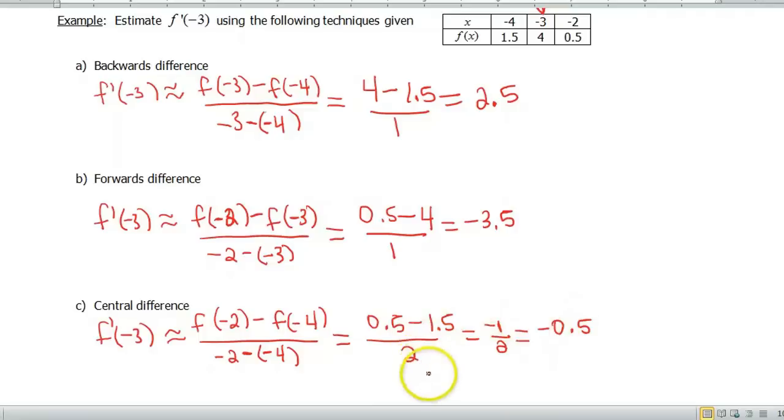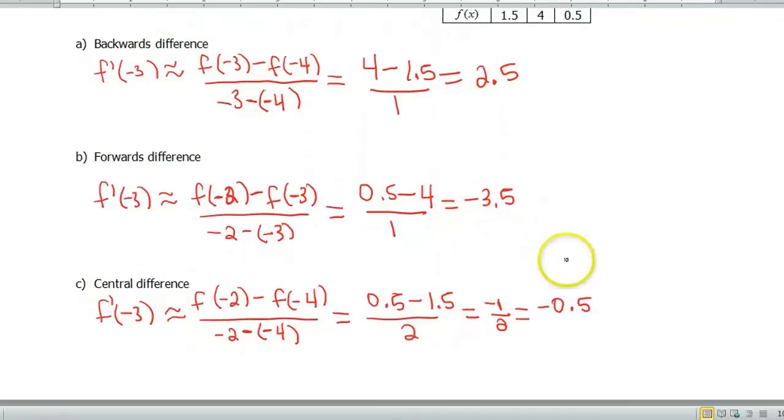What's interesting is the central difference can also be calculated given these two backwards and forwards differences. If you notice, this is also equal to... if you were to take the average of the backwards and forwards, that would give you the central. Remember, average means you're going to add those two values together, and if you divide by 2, you'll also get -0.5. I prefer to do the calculation using the formula, because just in case if one of these two numbers were off, that means this number would also be off. So I prefer to use the raw data in the table.